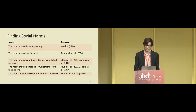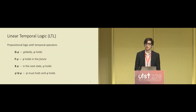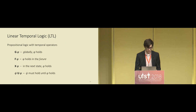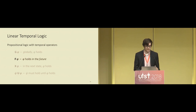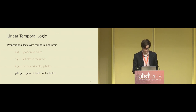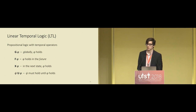The next step is to write the social norms in a representation that enables computational analysis. We use linear temporal logic, or LTL for short. LTL is propositional logic with added temporal operators. The G operator means globally over all states the formula phi holds. F phi means phi holds at some point in the future. X phi means in the next state phi holds true. And psi U phi means psi must hold true until phi eventually holds.